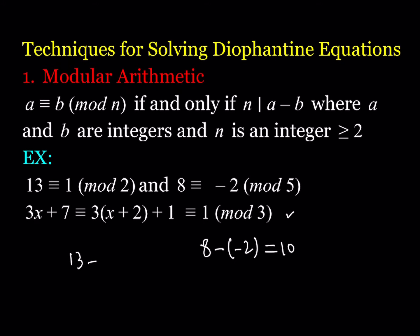The first and foremost technique for solving Diophantine equations is modular arithmetic. Modular arithmetic is a very powerful tool in number theory as well as in algebra. The definition for mod n: a and b are congruent mod n if and only if n divides a minus b.